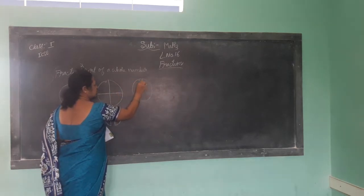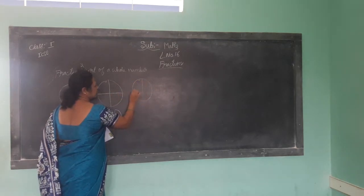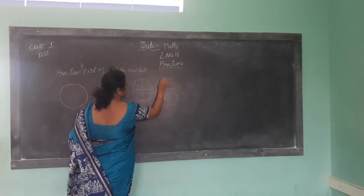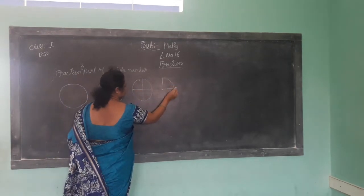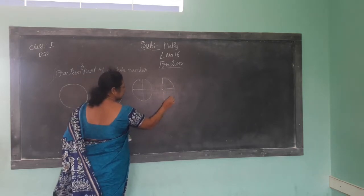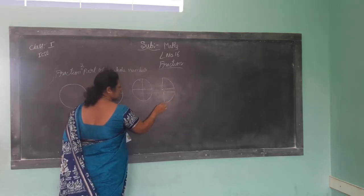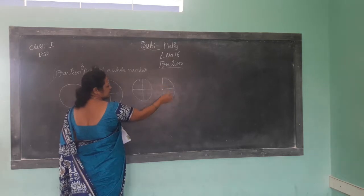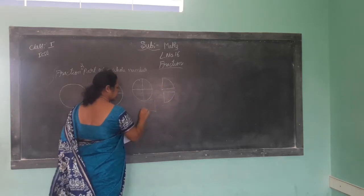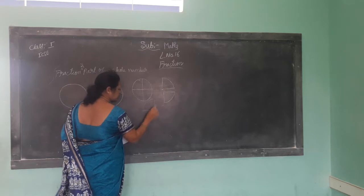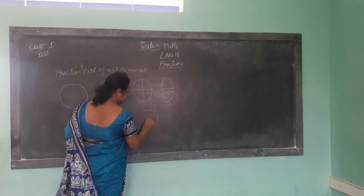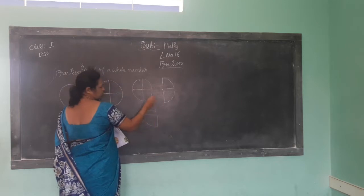Quarter. In this, if you make a quarter — this is one quarter. So next: one quarter, two quarters. Then one quarter, two quarters, three quarters. Next — four quarters.